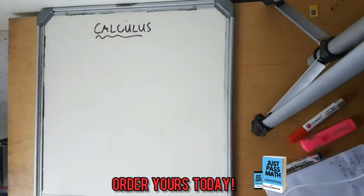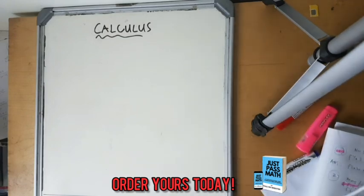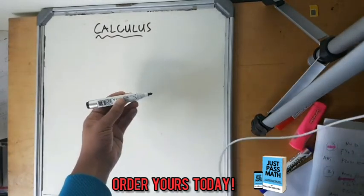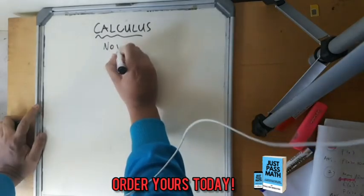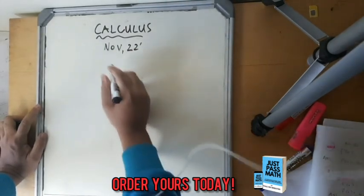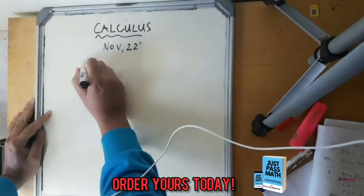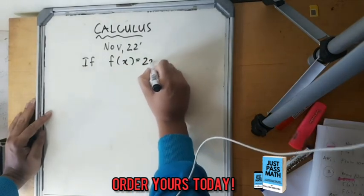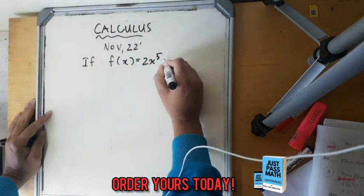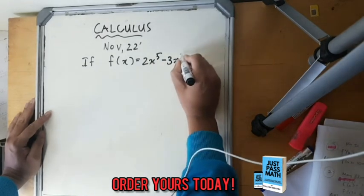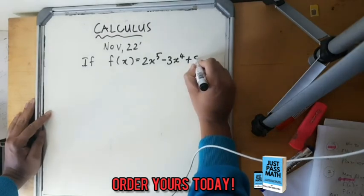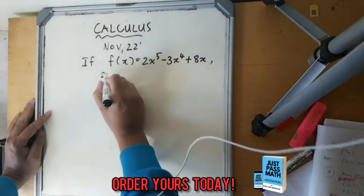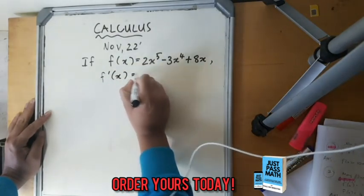It's about 11 questions and the best thing for you to do is take out your pen and a notebook. November 2022: if f(x) is equal to 2x to the power of 5 minus 3x to the power of 4 plus 8x, what is the derivative of f with respect to x?